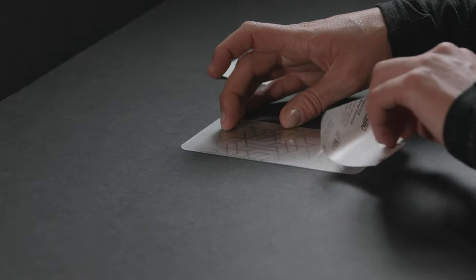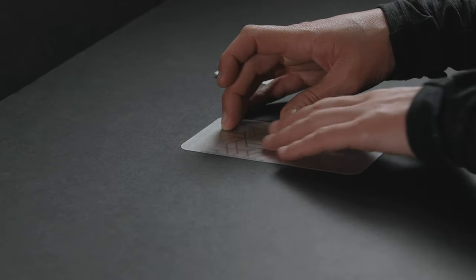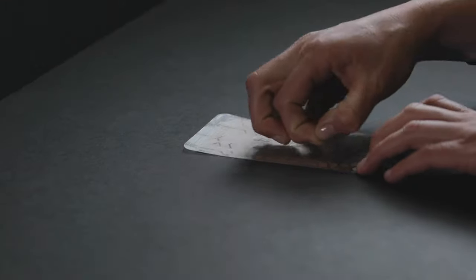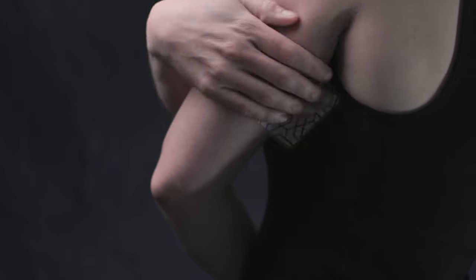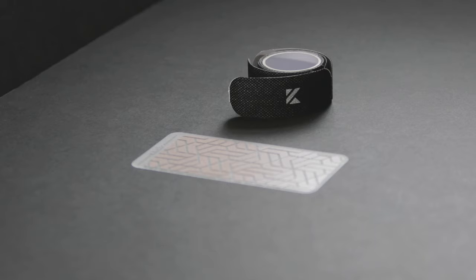Peel the second half of the adhesive backing and finish applying it to Kylo. When you are ready to use your pain patch, peel off the clear adhesive backing from Kylo and apply it to your skin or clothing. Additionally, we have a KT tape adhesive as an alternative.